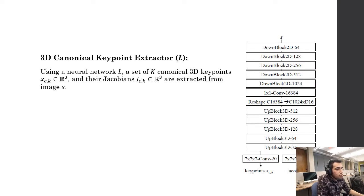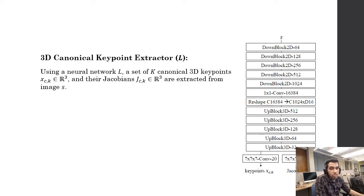In the 3D canonical key point extractor, also known as network l, a set of K canonical key points and their Jacobians are extracted from image S. The Jacobians represent how a local patch around the key points can be transferred into a patch in another image via a defined transformation. The authors used a U-Net style encoder-decoder to extract the canonical key points. These canonical key points are formulated to be independent of pose and expression changes — they should only contain a person's geometry signature such as the shape of the face, nose, or mouth.